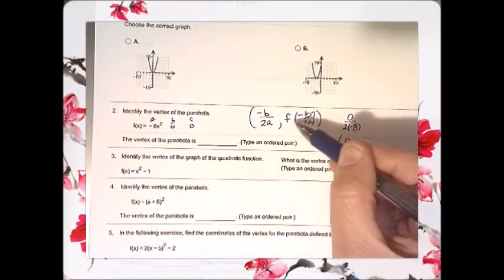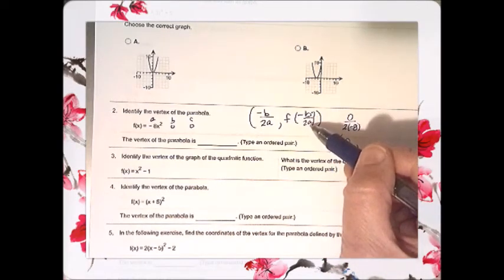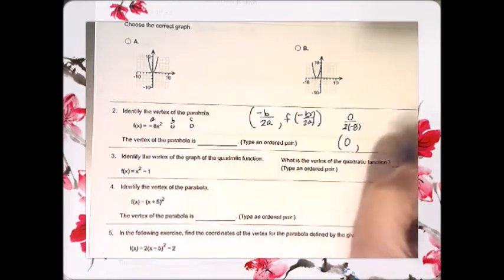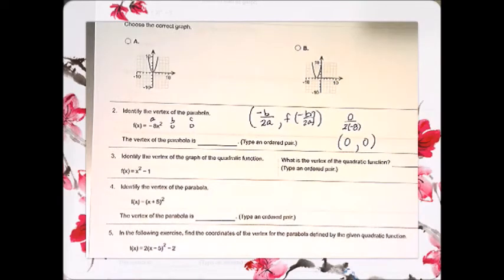Well, what that's going to give me is just 0 for my x coordinate. When I plug that in, that's what f of negative b over 2a tells me to do, is to plug that 0 in to the function. I get 0 there too. So, the vertex of this parabola is 0, 0.